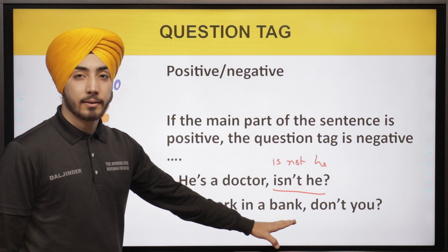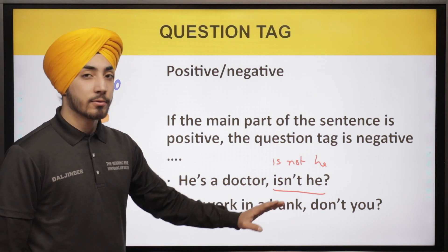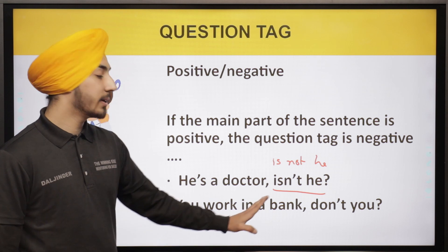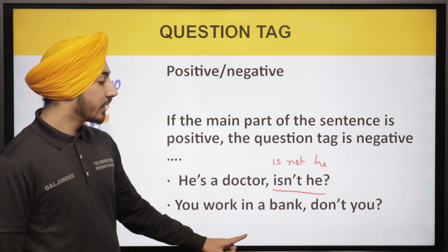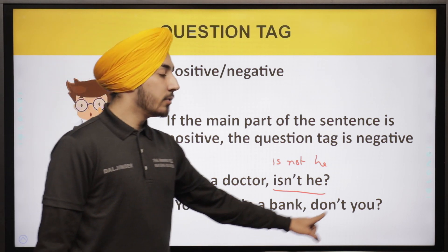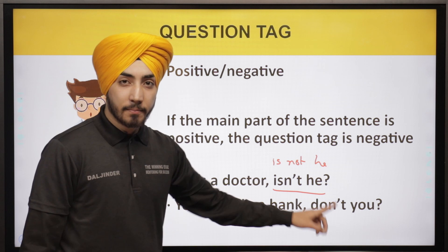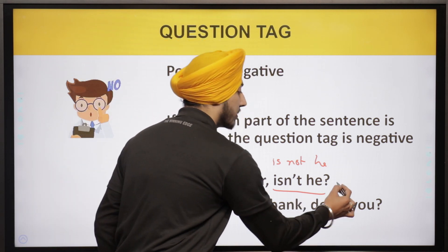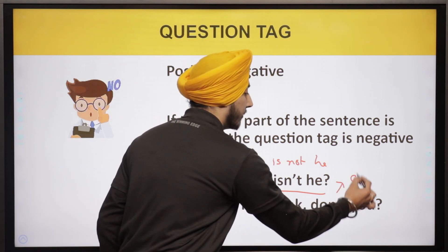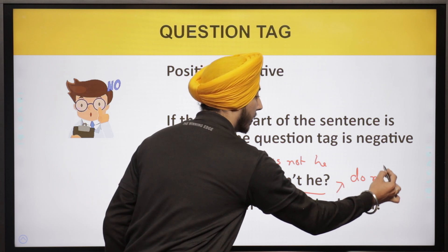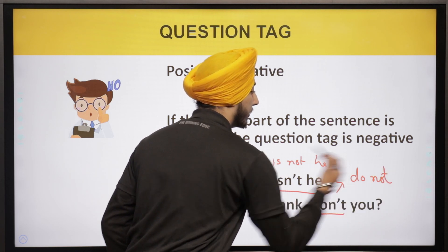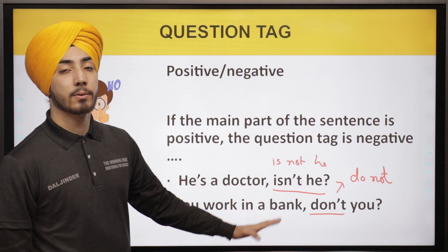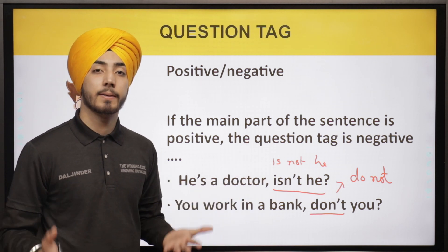Another example: 'You work in a bank.' This is a positive sentence — no 'not', 'never', or 'no' is used. The question tag would be 'don't you?' — because 'don't' is actually formed from 'do not'. So: 'You work in a bank, don't you?'